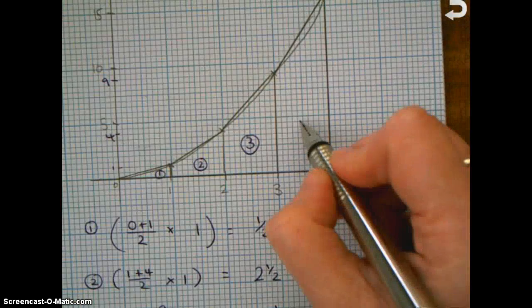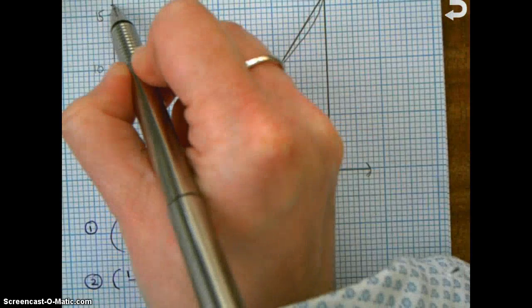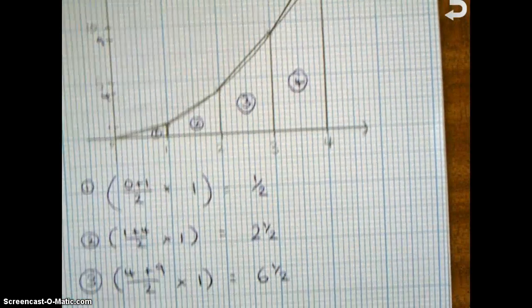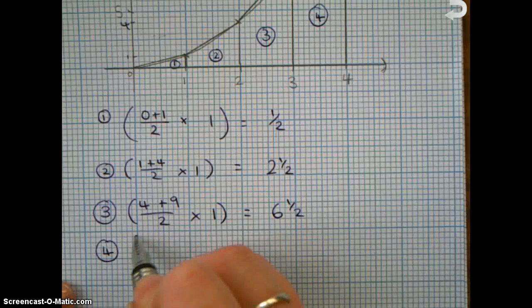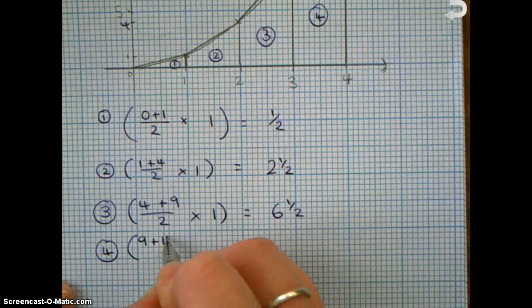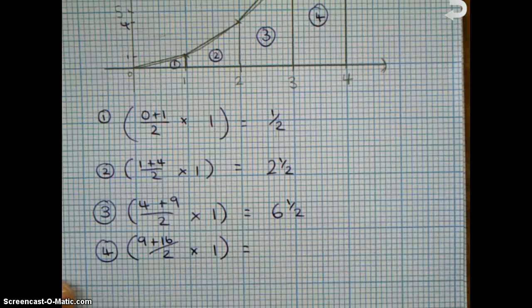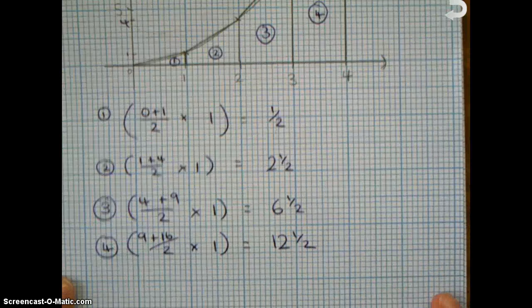And we do the same for the last trapezium. This height's 9, that point goes up to 16 at the top up there. So the area of the fourth trapezium will be 9 plus 16, divided by 2, times 1. So 9 add 16 is 25, divided by 2 is 12 and a half, times 1 is still 12 and a half.